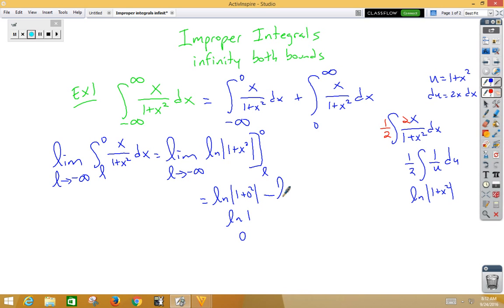Minus the natural log absolute value 1 plus l squared. Now remember, we're plugging in and we're going to negative infinity. So if I'm going to negative infinity, then this, because of that negative, is going to be negative infinity. This problem diverges, which many of them do.